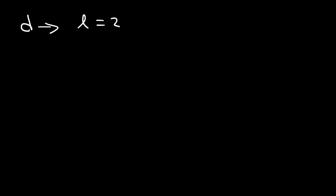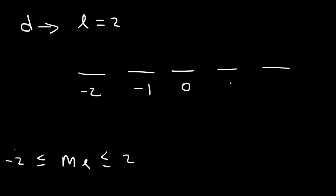Now let's talk about the d sublevel. For the d sublevel, L is two, and d has five orbitals. m L varies between negative L and L, so if L is two, m L has to vary between negative two and positive two. We can place five m L values for each orbital, and so m L describes the orientation of the orbital — each box you see here has a certain m L value.